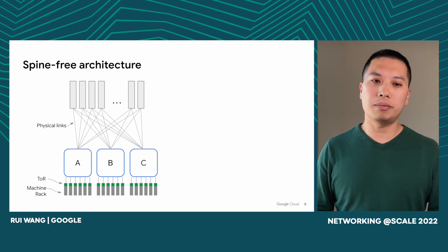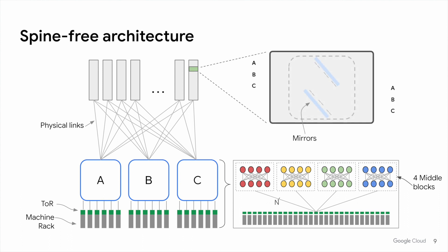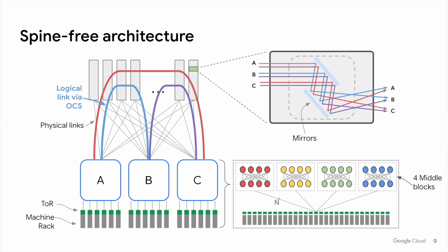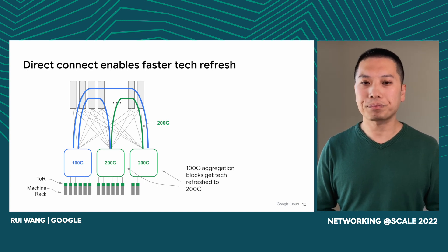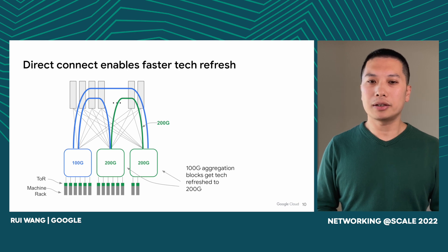Now let's take a walk through this new architecture in a bit more detail. The aggregation blocks remain largely unchanged; each is made up of four middle blocks, and a ToR switch fans out to all four middle blocks. Zooming into one OCS: to create a bi-directional logical link between A and B, we instruct the OCS to rotate the mirrors to cross-connect a port from A to a port from B in both directions. Similarly, we can create direct links between B and C and between A and C. An immediate consequence is that as we refresh 100G blocks to 200G, the direct links between 200G blocks run immediately at 200G without waiting for spines to be upgraded first.